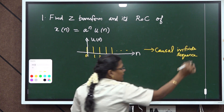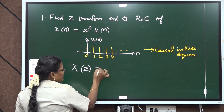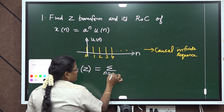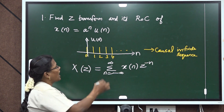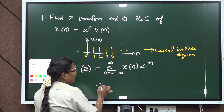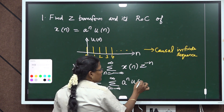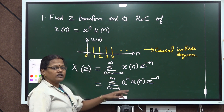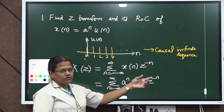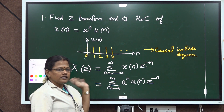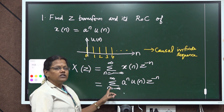For this sequence we are going to find the Z-transform as well as the Region of Convergence. Write the formula: X(z) is equal to summation n equal to minus infinity to infinity x(n) z power minus n. In the place of x(n), substitute the given signal a power n times u(n). Since we know u(n) has values only from 0 to infinity and not from minus infinity to minus 1, the summation limit becomes n equal to 0 to infinity.